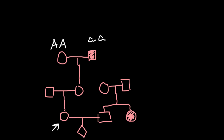We also know that the man's sister has this genetic disorder, so she must be homozygous recessive, small a small a. Her parents look phenotypically normal, so they must be heterozygous for this autosomal recessive genetic disorder. Now we need to find the probability for the woman to be heterozygous, and for the man to also be heterozygous, in order for the child to express this genetic disorder.